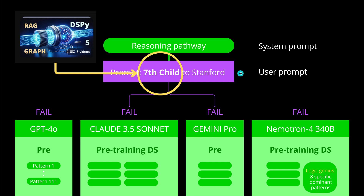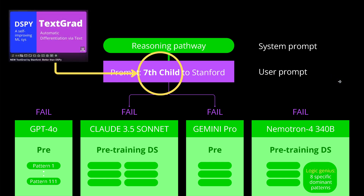One subscriber asked me: what is the reason you ask for the seventh child? I just had to make sure that the system, understanding how it works, is not able to come to a simple solution. Some of you might also ask: you showed us a new methodology, TaxGrad by Stanford University, that is better than DSPy — the next step in the evolution of prompt engineering. And yes, I leave it to you if you want to experience whether TaxGrad works on my particular example.